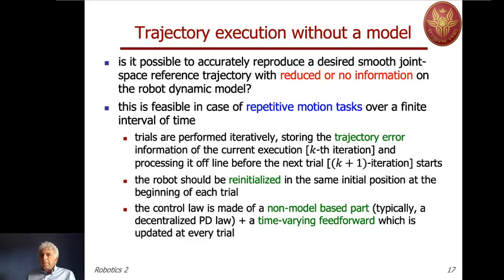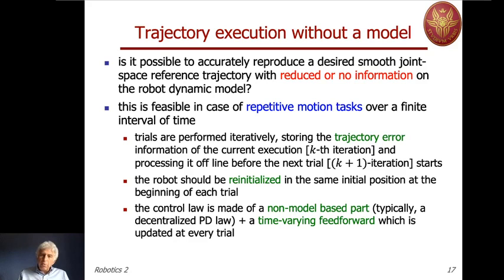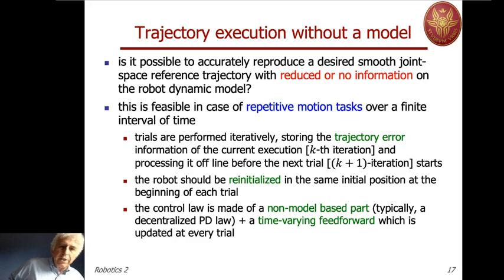The trajectory task must be executed over a finite interval of time a certain — actually very large — number of times. This is not unusual in industrial applications: once an industrial robot is programmed for a task, it repeats that task thousands of times. We may allow a few trials before full operation, until sufficient tracking performance is achieved. So we allow iterative or repetitive trials, and learn the command that allows perfect tracking — essentially learning the inverse dynamics for the general trajectory tracking case.